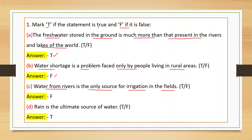Third statement: water from rivers is the only source for irrigation in the fields. Rivers ke alava bhi kai sources hain — canal se paani le sakte hain, pond se bhi — so this is a false statement, answer is F. Fourth: rain is the ultimate source of water — definitely a true statement, answer is T.